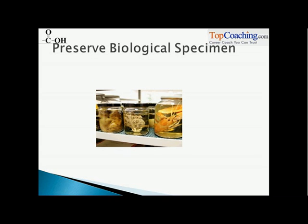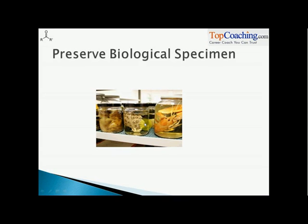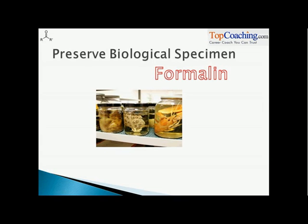First and foremost, in your chemistry labs you must have seen those specimens — of rats, of plants, of a frog. How do we preserve those biological specimens? To preserve them means so that they don't get rotten or spoiled. For that we need one of the aldehydes known as formalin. Formalin is used to preserve biological specimens.